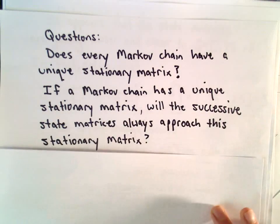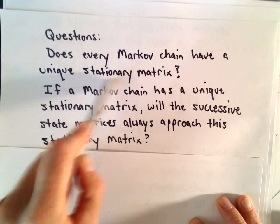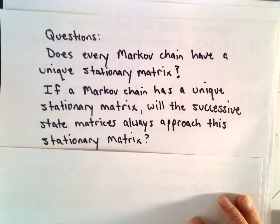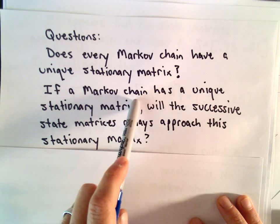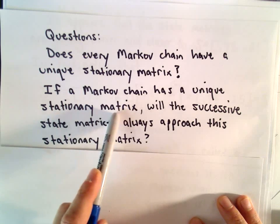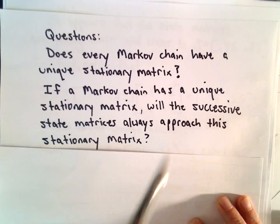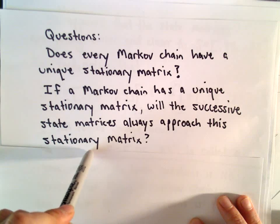A couple questions here. Does every Markov chain have a unique stationary matrix? And if a Markov chain has a unique stationary matrix, will the successive state matrices always approach this stationary matrix?